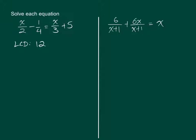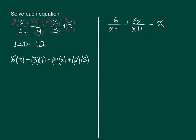So what we do with this least common denominator is we multiply each term by 12. The entire reason for multiplying by the LCD is to get rid of the denominator. So I will come down here and rewrite a new equation, and in this equation you can see there are no more fractions.